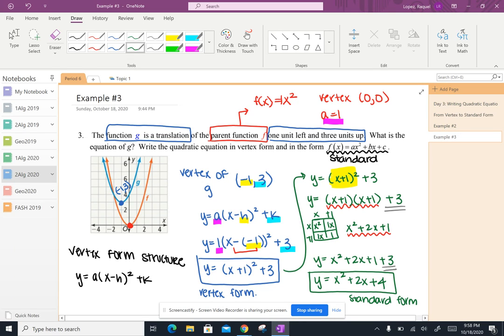And the y-intercept is 4. And if I look at my blue graph, here it is. There's my y-intercept of (0, 4). All right, let's go ahead and try example number 4.